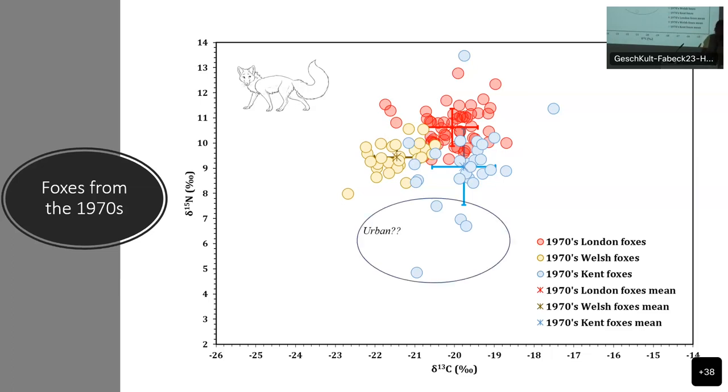If we look at nitrogen, we can see that we've got these four Kent foxes that have very low nitrogen values. We think that most likely they are urban. But we are not yet sure. We are still doing many investigations on this. But low nitrogen values makes us think that they are urban.